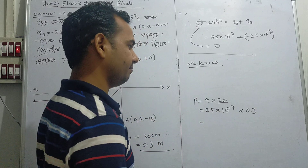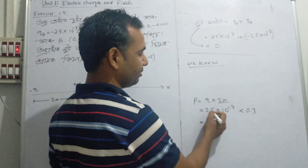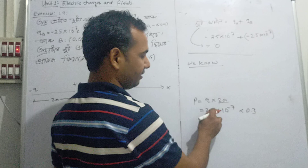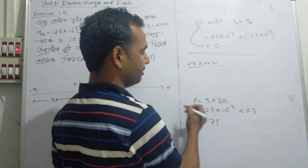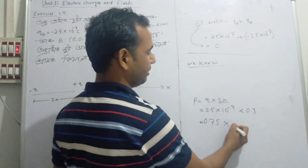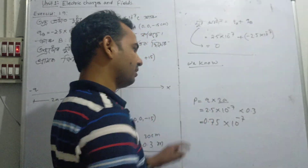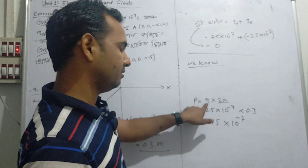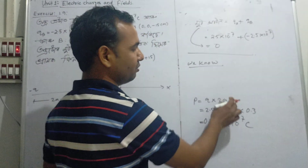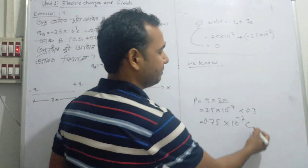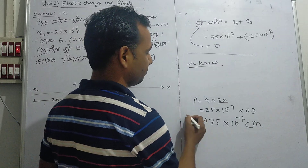So with Q equal to 2.5 into 10 to the power minus 7 Coulomb, and twice a equal to 0.3 meters, we can now calculate the dipole moment P. P equals Q into 2a, in units of Coulomb meter.